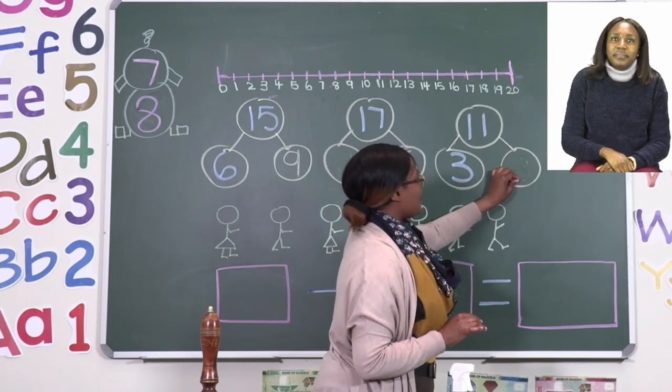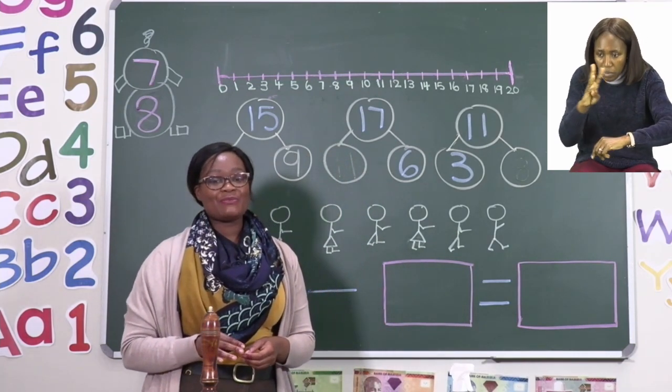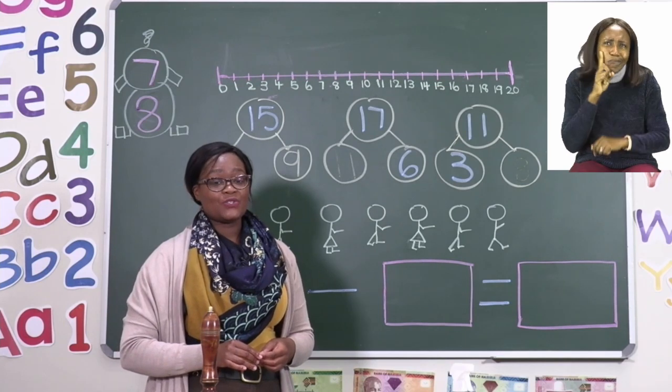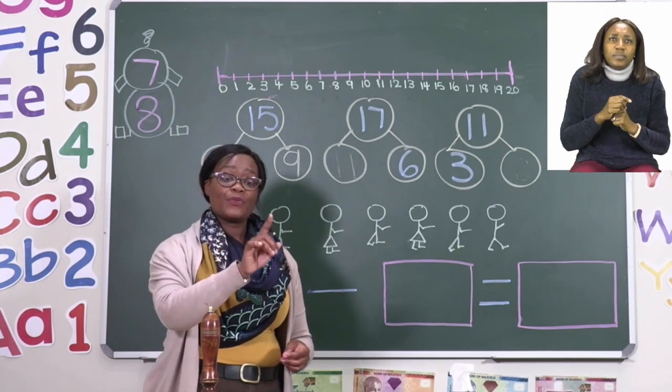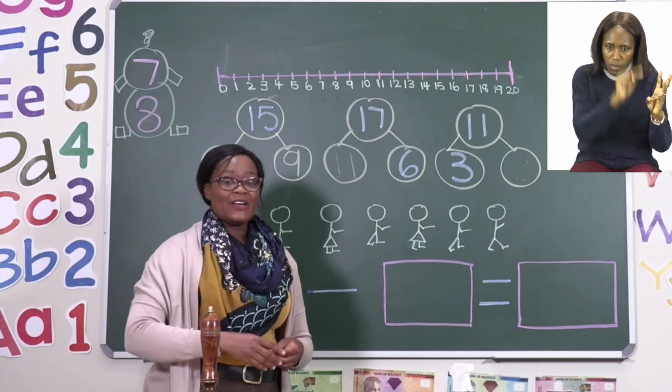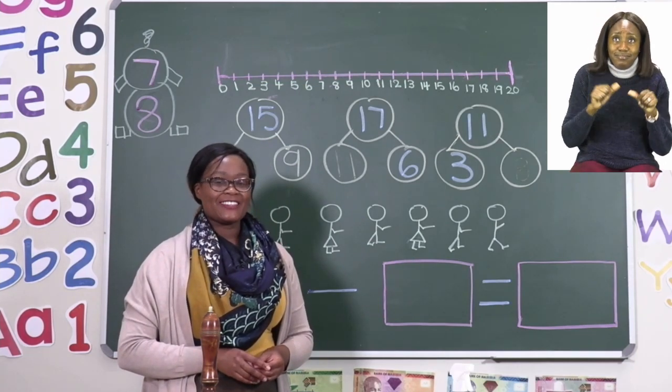So use the number line boys and girls to help you find your answers and remember to check carefully where you are starting. So the minute you hop the first time that is 1. When you are done with your number bonds you can move on to the next page, page 8.